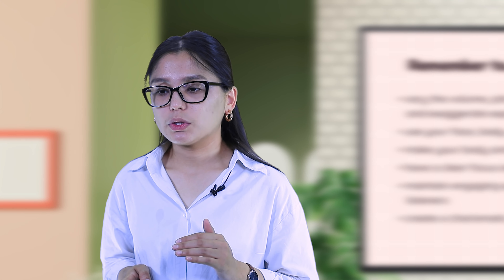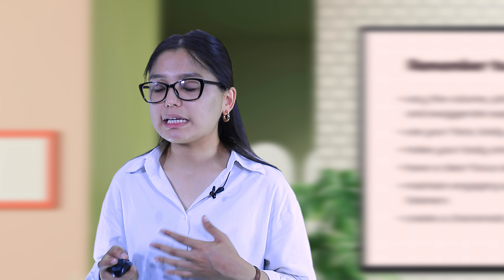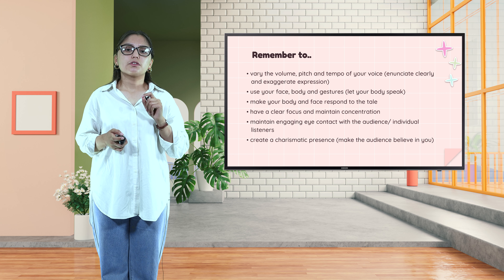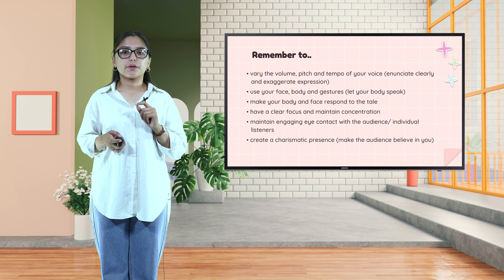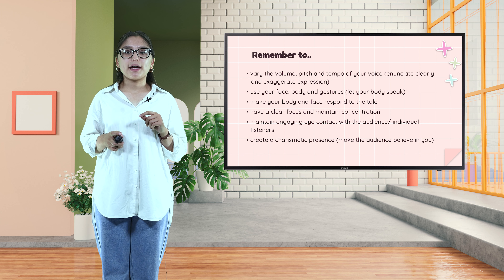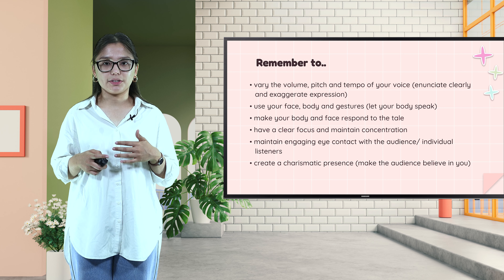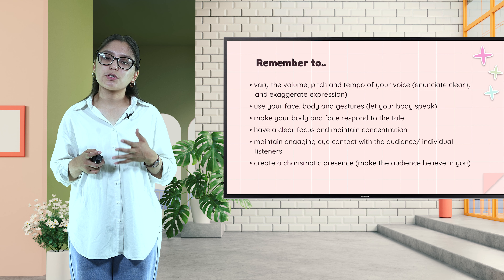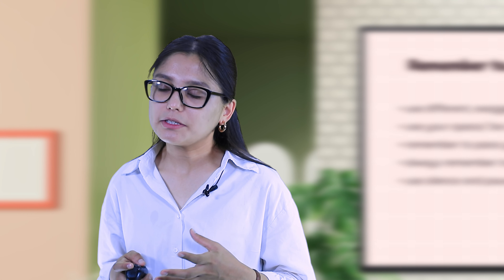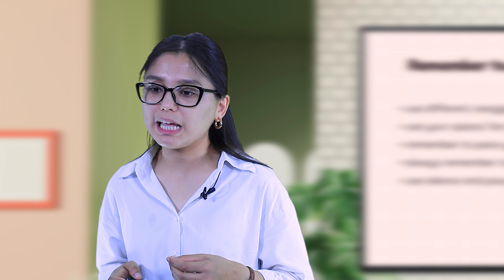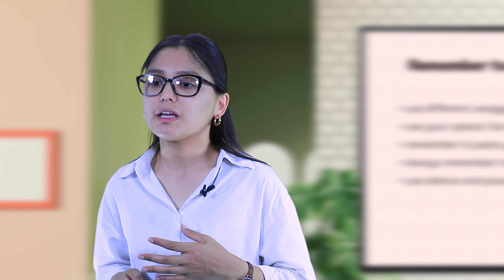Maintain engaging eye contact with the audience. If there is one student, engage eye contact with that individual listener — look at their eyes, it shows that you are monitoring them while speaking and it also makes them stay alert while listening. Please remember to have a charismatic presence — make your learners believe in you, believe that the characters they are listening to are in their teacher. Use exaggerated character voices: if you are telling information about an animal, please use that animal's voice at maximum; if it's an evil voice or happy voice, use low pitch, high pitch and different exaggerated voices within the characters you are engaging.